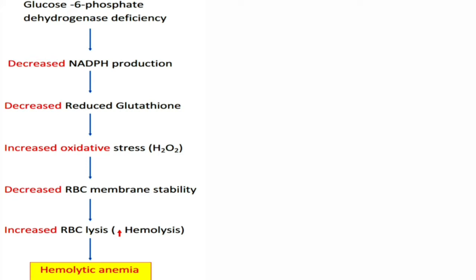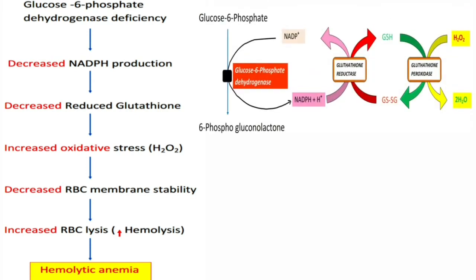Now we will see the reason for hemolytic anemia due to G6PD deficiency in sequence. Normally, glucose-6-phosphate dehydrogenase converts glucose-6-phosphate into 6-phosphogluconolactone, generating NADPH. It is the lack of NADPH — not its presence — that is responsible for hemolytic anemia. When this enzyme is deficient, it leads to decreased production of NADPH.